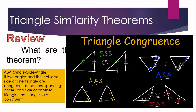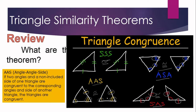And then lastly, we have the AAS or the SAA — angle-angle-side. It states that if the two angles and a non-included side of one triangle are congruent to the corresponding angles and side of another triangle, then the triangles are said to be congruent.